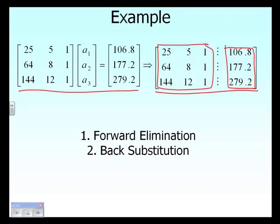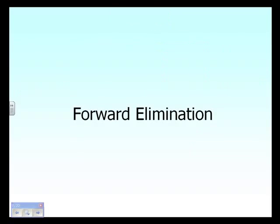There are two steps of Gauss elimination with partial pivoting: forward elimination and back substitution. Gauss elimination with partial pivoting is exactly the same as the Naive Gauss elimination method, except for one additional step taken right before the forward elimination steps. Let's see what that means and the difference between the two methods.